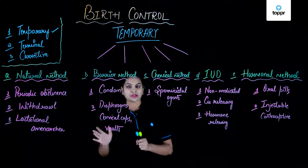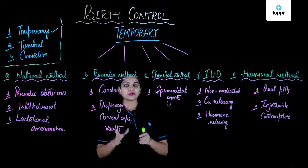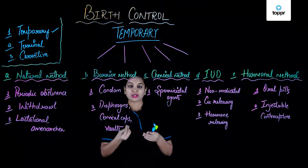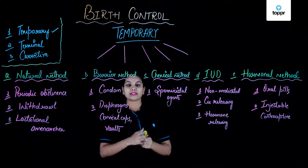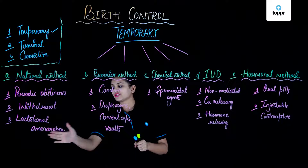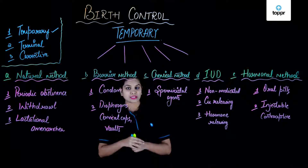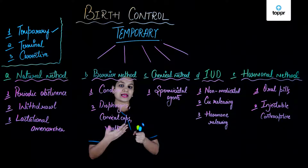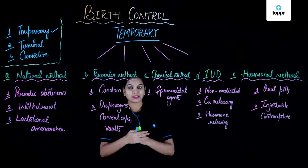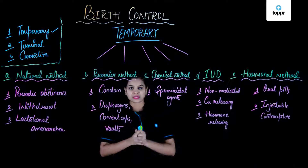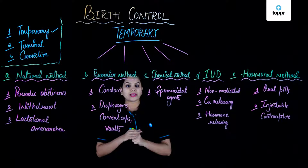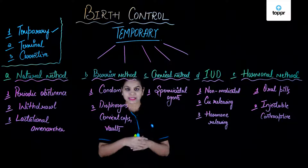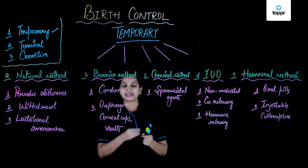Next is the withdrawal method, which means that during sexual intercourse the male withdraws the penis just before ejaculation so that the female reproductive system doesn't receive sperm. Last is lactational amenorrhea — just after parturition a female starts to lactate, and due to high levels of prolactin there is a delay in the menstrual cycle and therefore ovulation. After six months of parturition it is considered a safe period with nil chances of pregnancy.